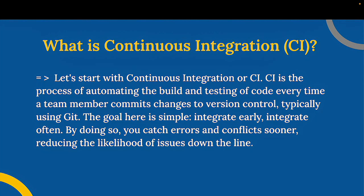In CI, every commit triggers a series of automated tasks. These tasks might include compiling code, running unit tests, and checking code quality. If everything passes, the code is integrated into the shared repository, ready for the next step in the pipeline.